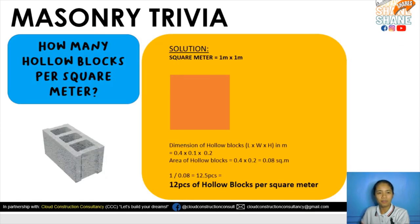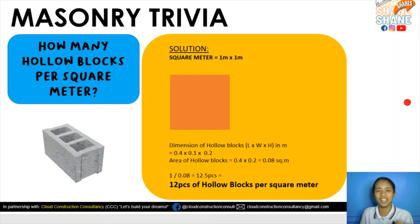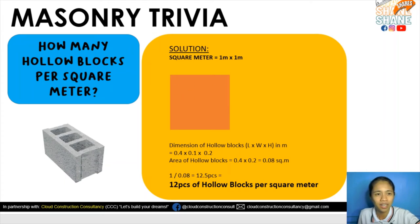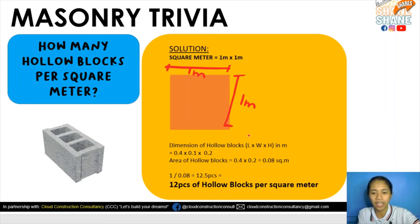Trivia: how many hollow blocks per square meter? This helps us determine how many hollow blocks we will need. The solution is straightforward but still requires technical computation. For example, we have a 1 meter by 1 meter area, since we are talking per square meter.